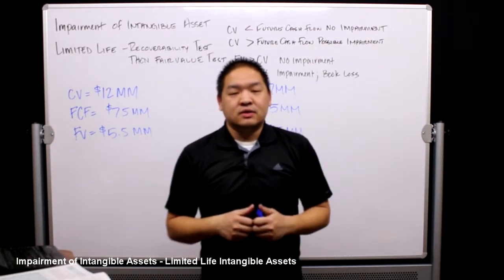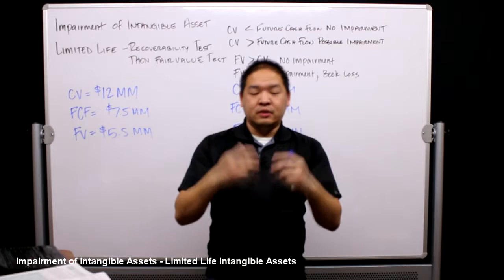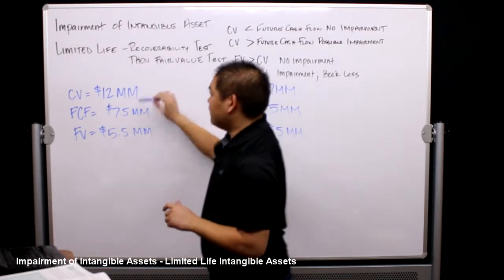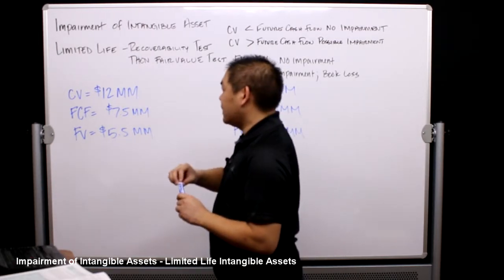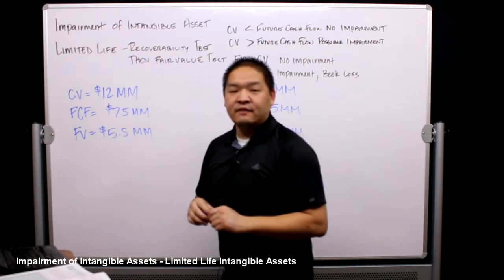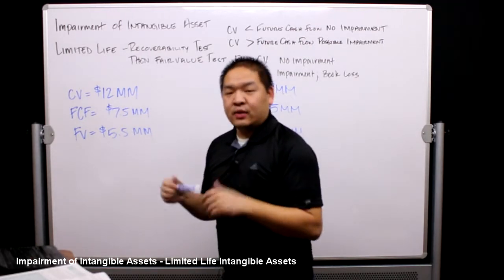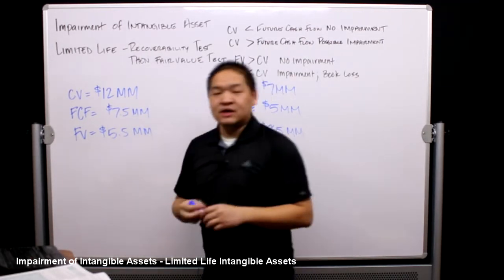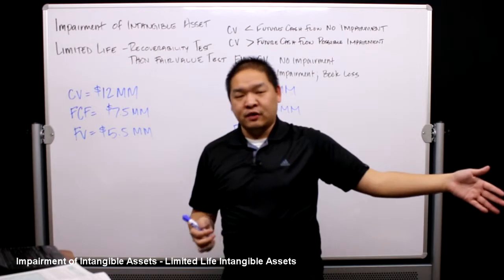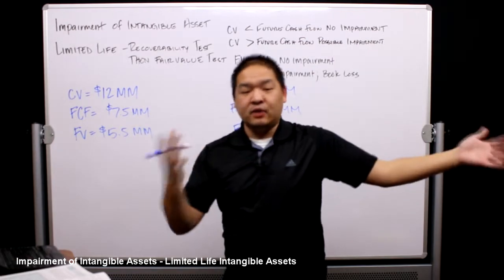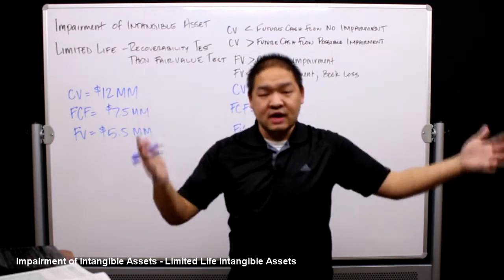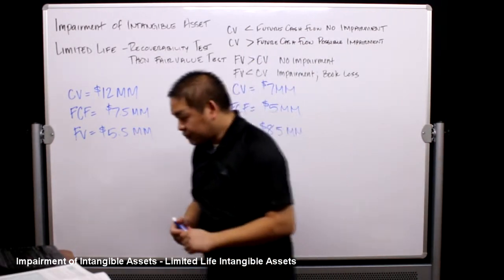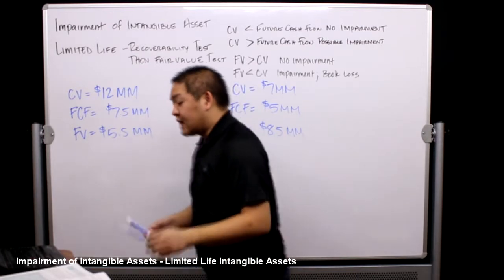It was further determined that the fair value of the asset is five point five million dollars. So if they were to actually sell this patent, it would be worth five point five million. So it's on the books for twelve million, it's worth five point five, and they think they can get seven point five million dollars over the rest of its life.